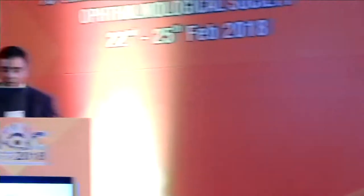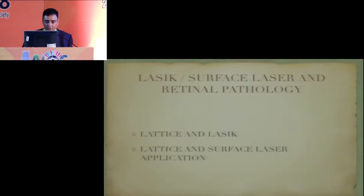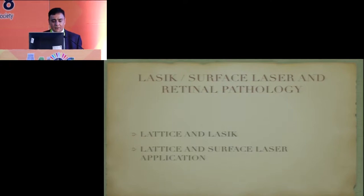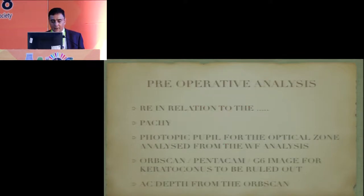Good morning to you all and thank you, Chitra. I am going to talk about when ICL can be advised or done — this controversy is always going to be there. When can we do LASIK with surface or retinal pathology? If a patient has LASIK with lattice in the retina, you can laser them and then go ahead and do an ablation. If the patient does not want that, you can do a surface treatment if you have a fear that the pressure on the eye is going to increase. When to create a flap, when to do surface, when to do LASIK, when to do ICL — that is what I am going to show.